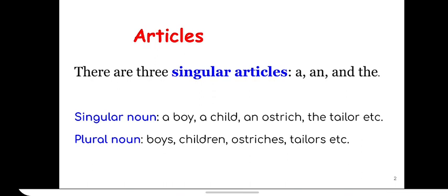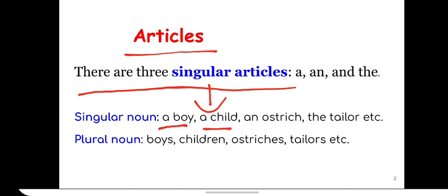So especially in writing, it is quite important. Now, there are three articles in English language and all three are singular articles: a, an, and the. Singular here means we can use it before singular noun like a boy, a child, an ostrich, the tailor.